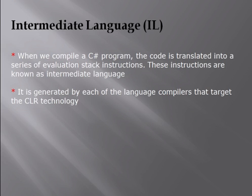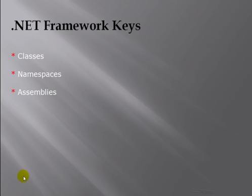The next point is Intermediate Language (IL). When we compile a C# program, the code is translated into a series of evaluation stack instructions. These instructions are known as IL — Intermediate Language — also known as MSIL, Microsoft Intermediate Language, which is a processor-independent representation of executable code. IL is generated by each of the language compilers that target CLR technology.